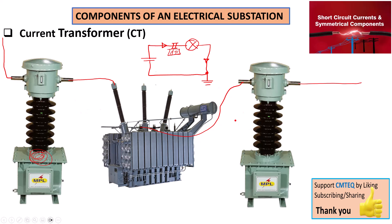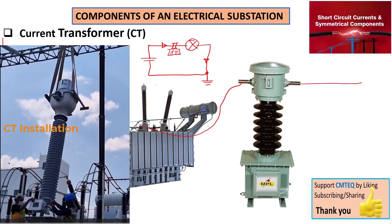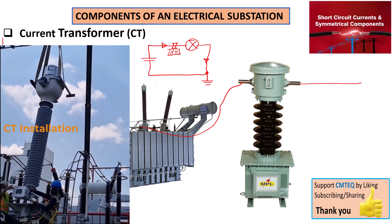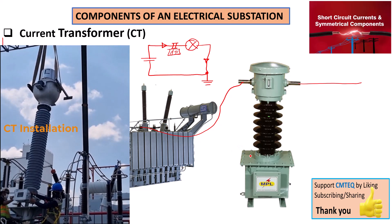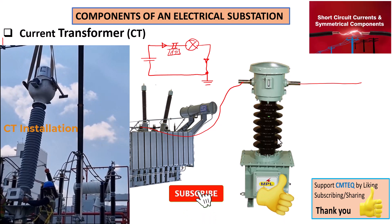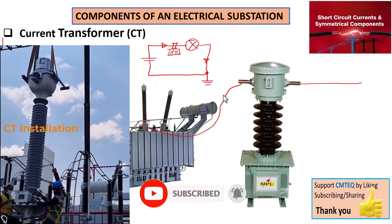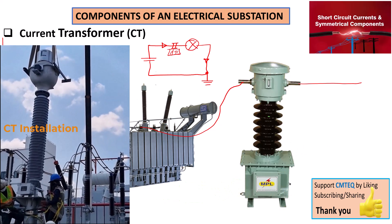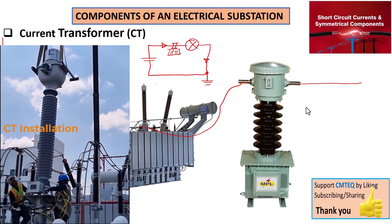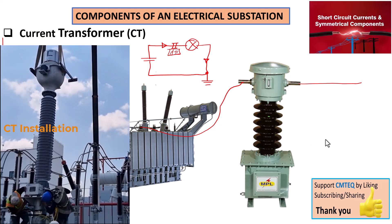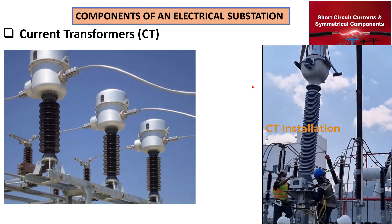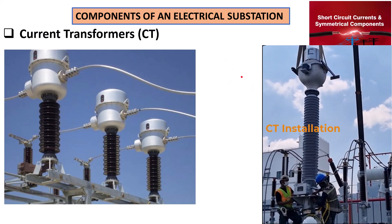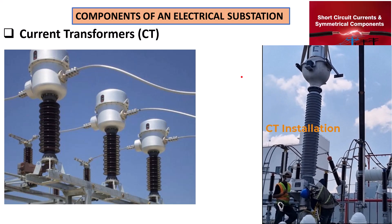The basic function of your current transformer in terms of measuring is as follows. There are three main functions of a current transformer: one — to measure, two — to protect, and three — to control. It needs to accurately measure current, provide protection once that current goes outside of bounds, and control equipment such as circuit breakers by providing the signal for tripping.